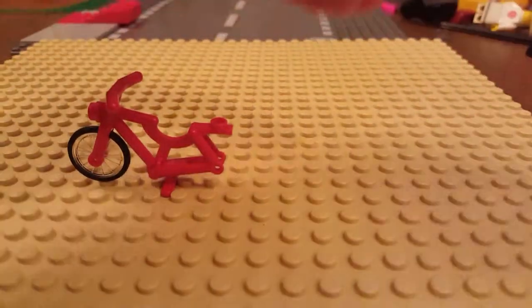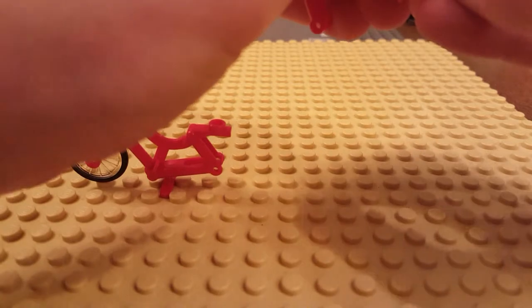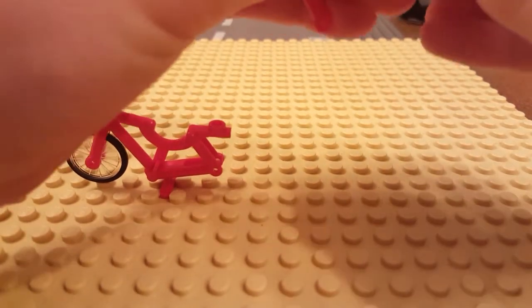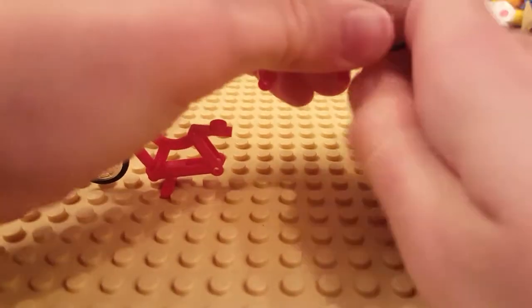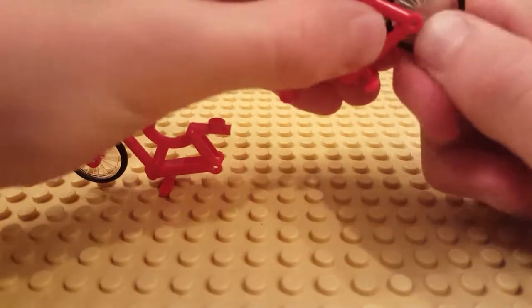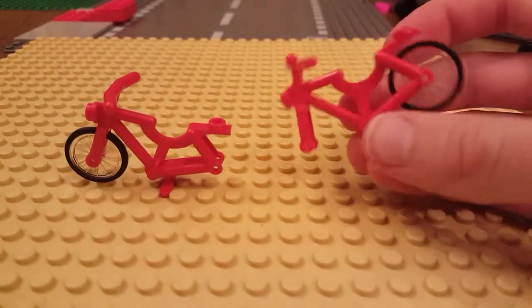Then, take another bike piece and add the wheel at the back of it. Like this.